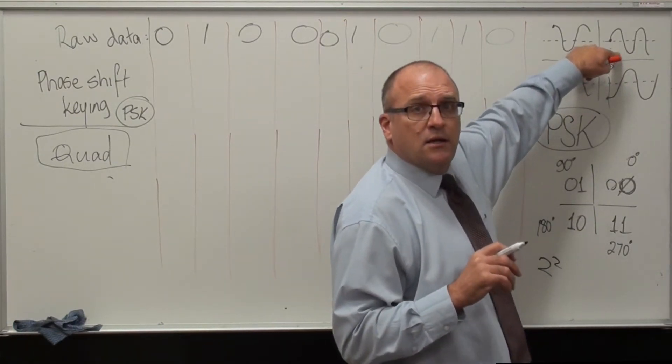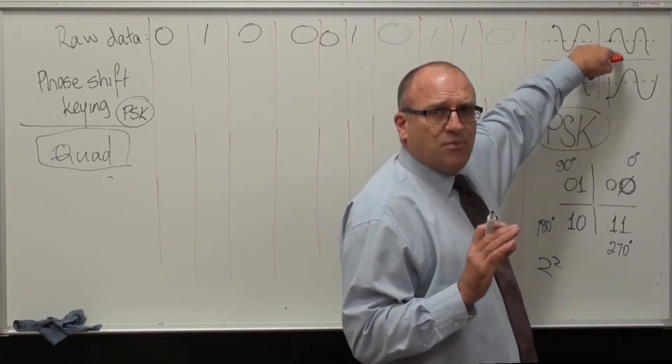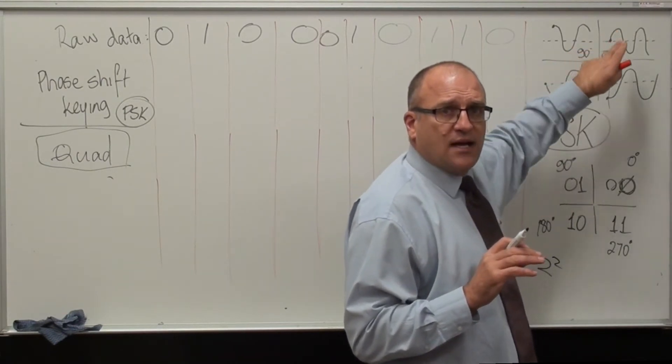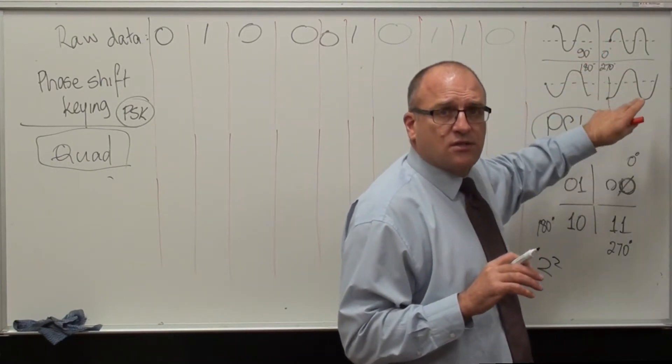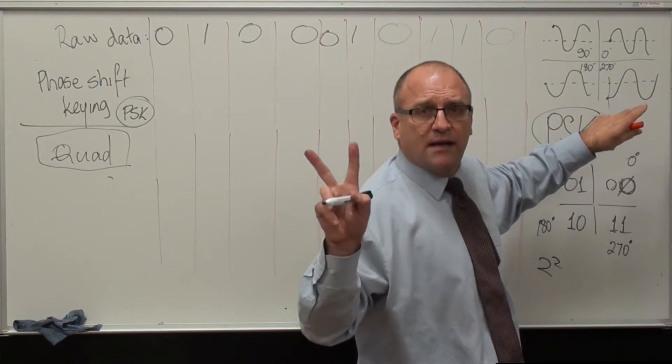that tells the demodulator, if it starts in 0 phase, then the first two digits in binary are 0, 0.